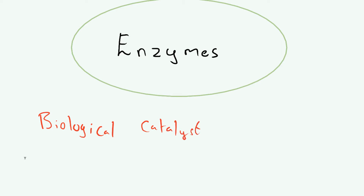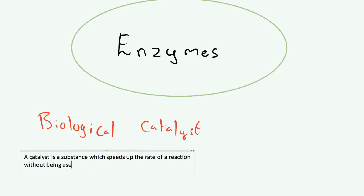What does that mean? If you study chemistry, you should know what a catalyst is. A catalyst is a substance which speeds up the rate of a reaction without being used up in the reaction. A biological catalyst is just one which is made inside a cell. So an enzyme speeds up the rate of reactions and is not used up during a reaction.